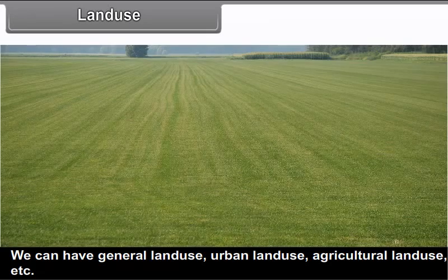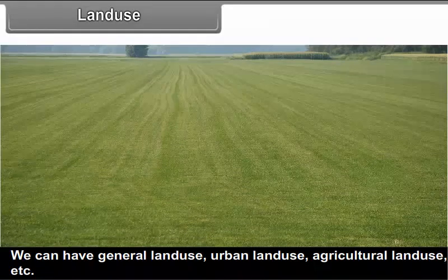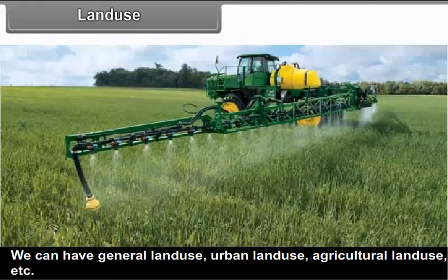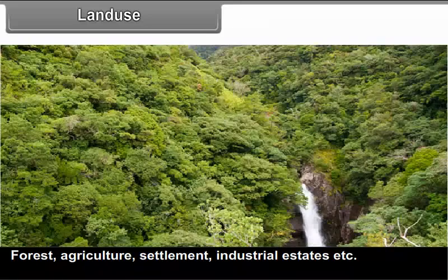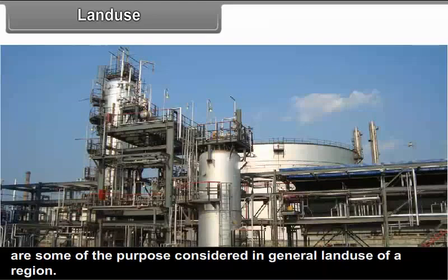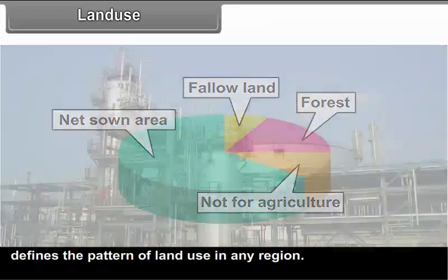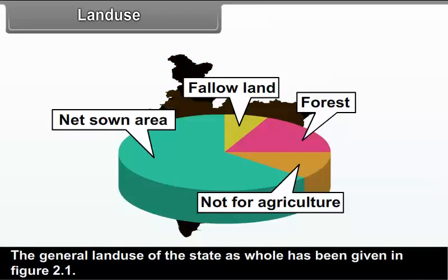Land use: The term land use relates to the purposes to which land in a given region is put to use. We can have general land use, urban land use, agricultural land use, etc. Forest, agriculture, settlement, industrial estates, etc. are some of the purposes considered in general land use of a region. The use of land for these different purposes and the extent of land used for each purpose defines the pattern of land use in any region. The general land use of the state as a whole has been given in figure 2.1.